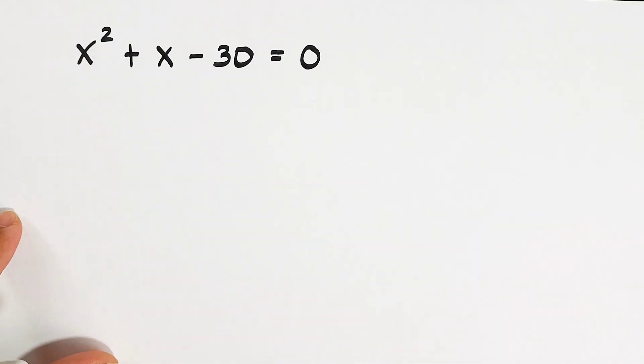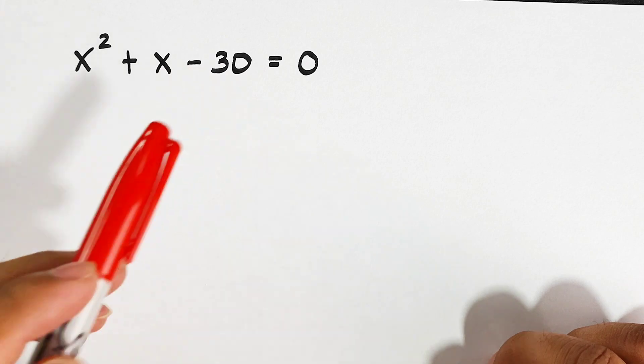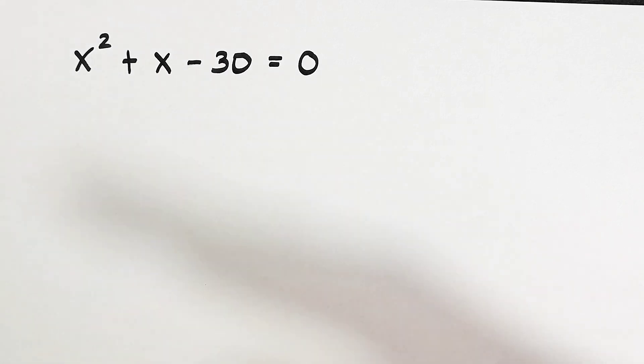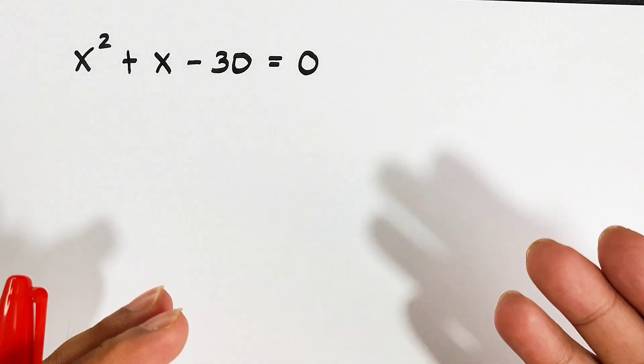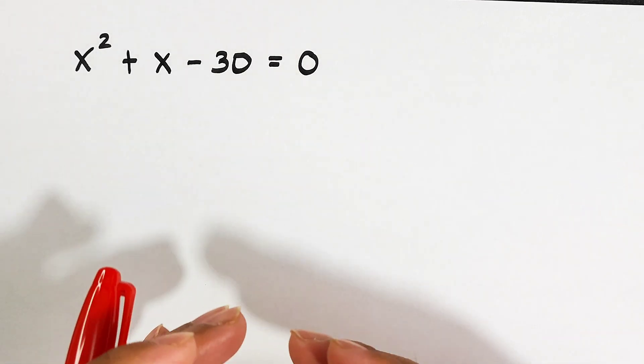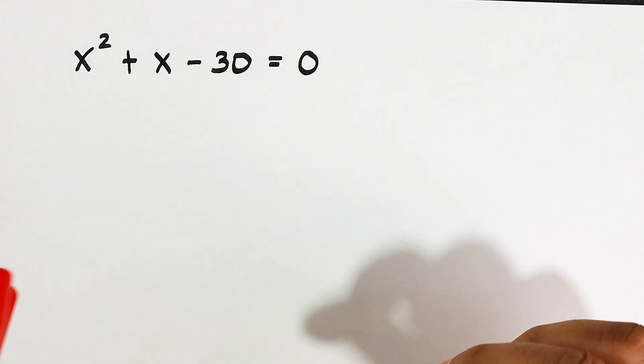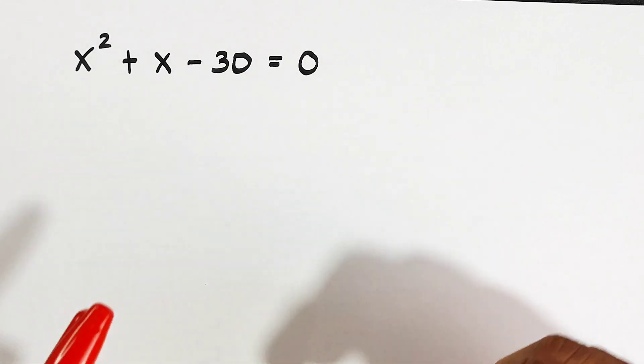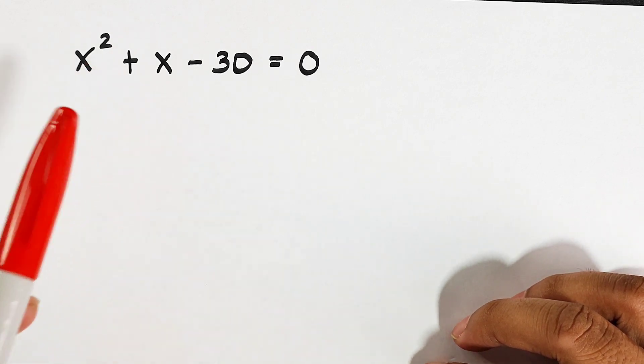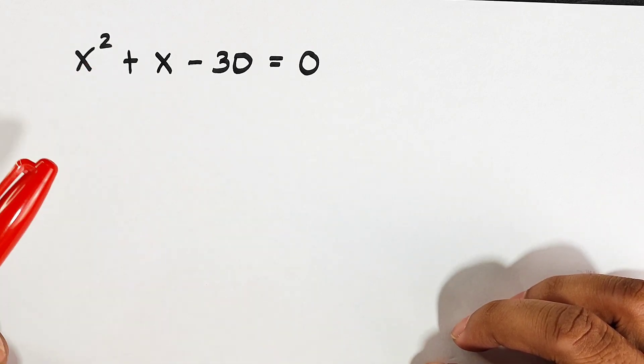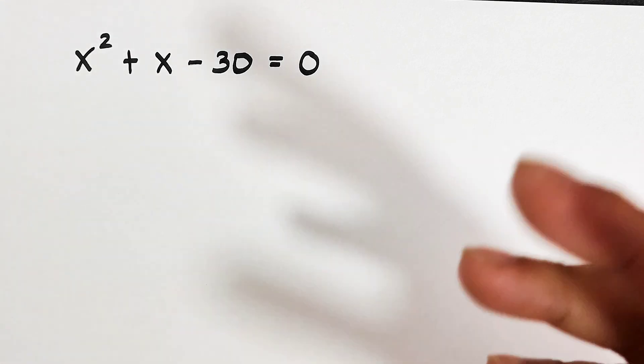So what we have here is x squared plus x minus 30 is equal to zero. Now, to solve this problem, we need to identify first what kind of equation is this. By the way, this one is an example of quadratic equation because the exponent or the degree or the highest exponent of this equation is 2.